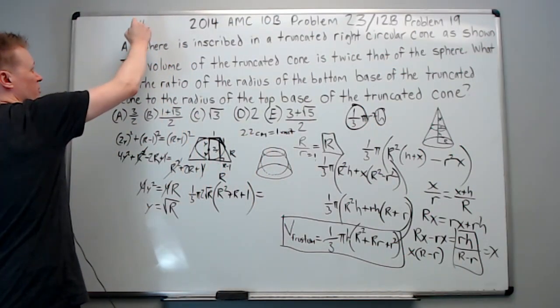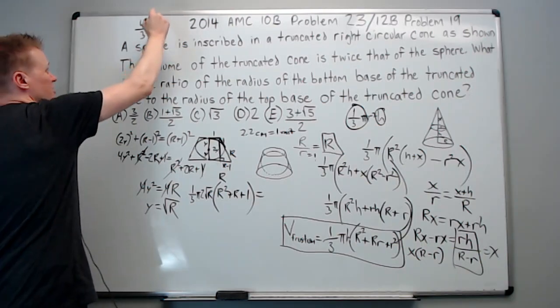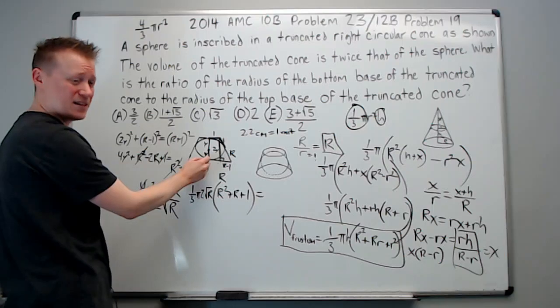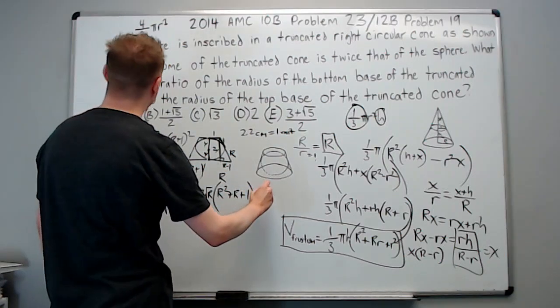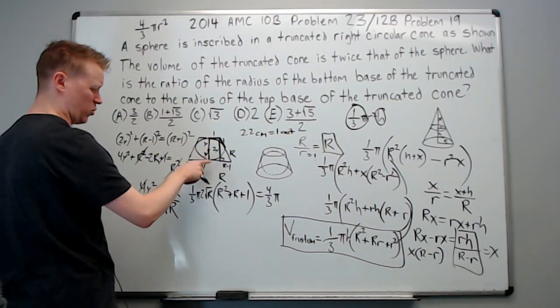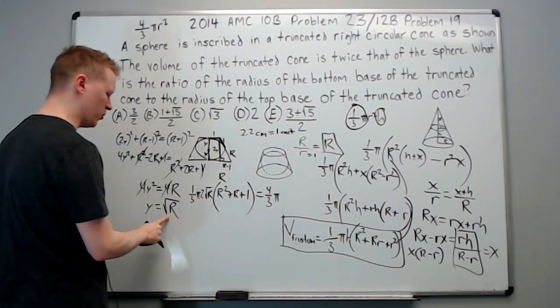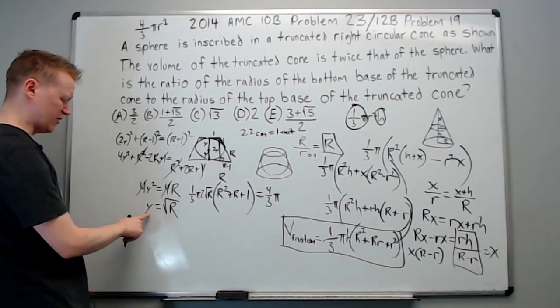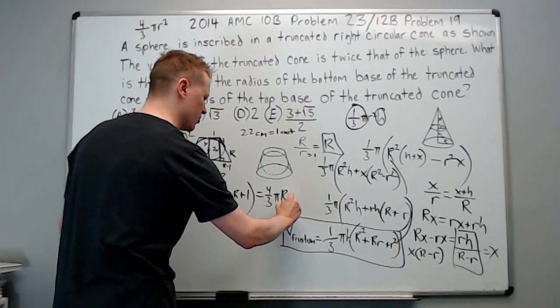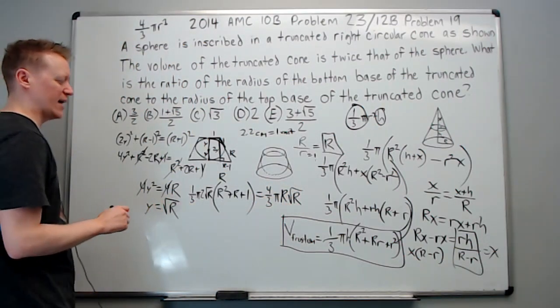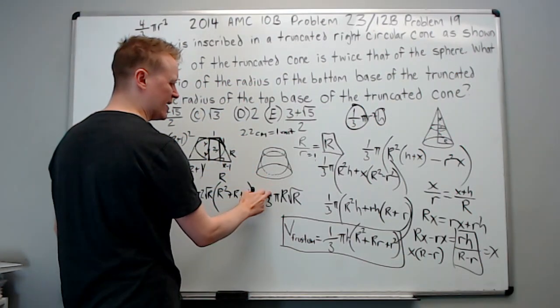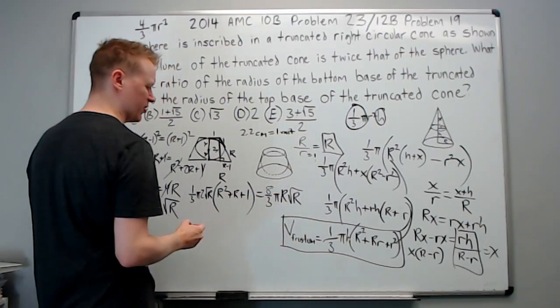So again, a sphere's volume, we'll just write it up here, is 4/3 pi r cubed. But r is not that r. It's actually this y right here, the radius of the sphere. So it's going to be 4/3 pi. And then the r again is y. So it's y cubed. But we don't want y. We want root R. So if I cube this, it's going to be this cubed, which is R root R. And we said times 2, twice that of the sphere. So we'll just change this 4 to an 8 because 2 times 4/3 is 8/3.